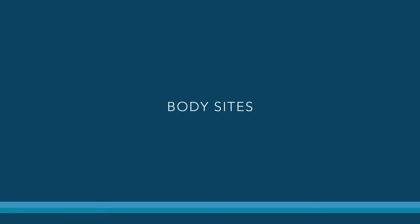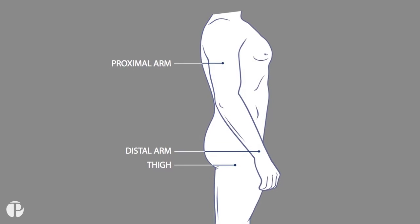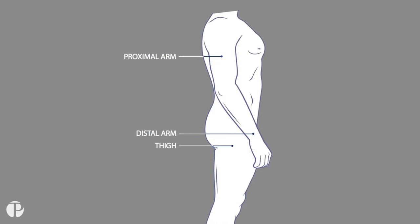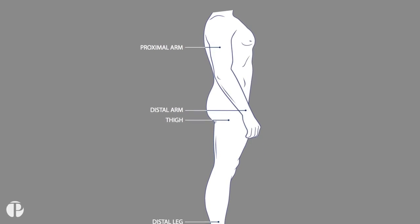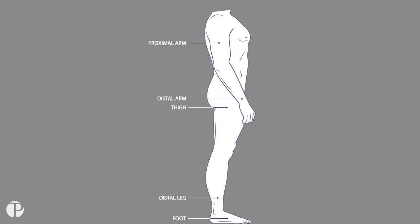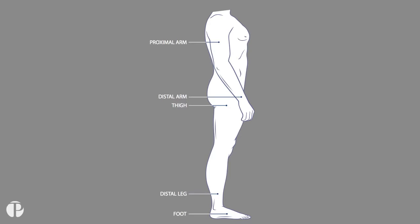Therapath has established reference values for five standard biopsy sites. The proximal arm site is located on the lateral surface midway between the shoulder and the elbow. The distal arm site is located on the upper surface of the forearm, 5 cm above the wrist.